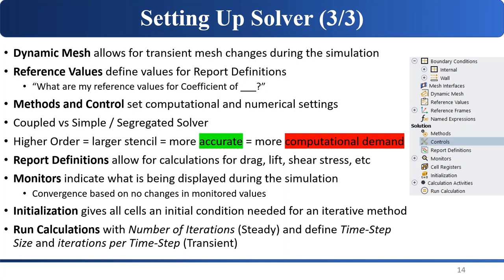You want to set up report definitions, which tell the computer to calculate drag, lift, shear stress, and other characteristic values of your aerodynamic body. Monitors are used to see how the error, continuity, or lift changes with each iteration — this is how you gauge convergence. If you see a physical value like pressure or lift not changing after any iterations, that means it's converged. Convergence and these monitors are also dependent on mesh quality and many other factors.